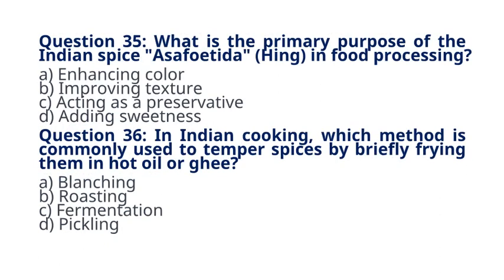Question 35. What is the primary purpose of the Indian spice asafetida (Hing) in food processing? A. Enhancing color. B. Improving texture. C. Acting as a preservative. D. Adding sweetness. The correct answer to question 35 is option C. Acting as a preservative. Explanation. Asafetida is known for its preservative properties and is used in Indian cuisine to extend the shelf life of certain dishes.